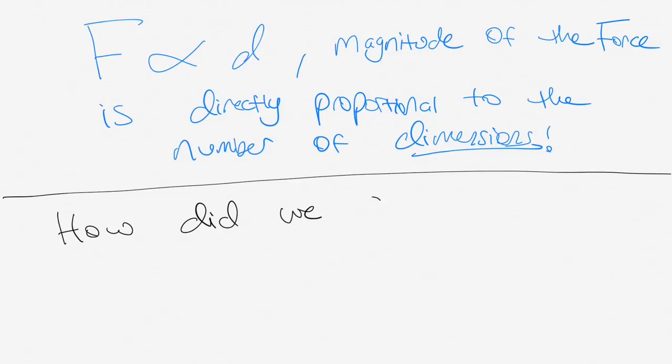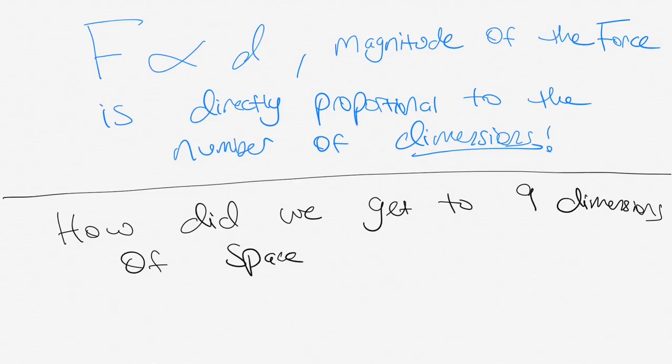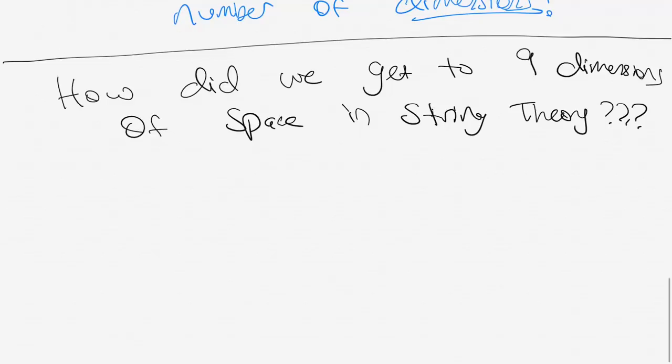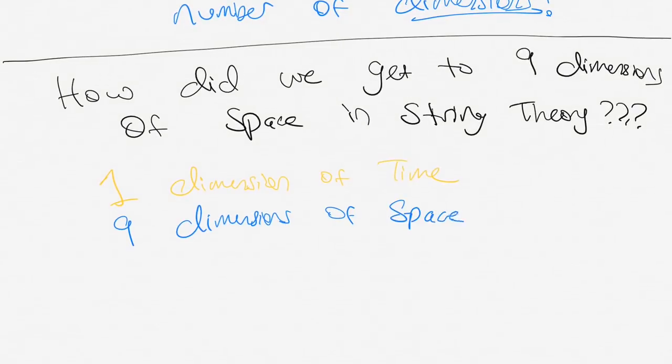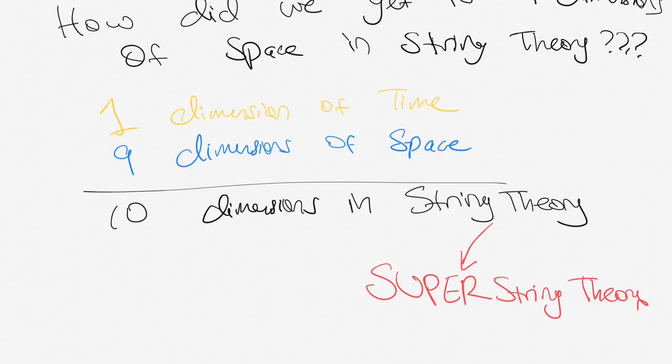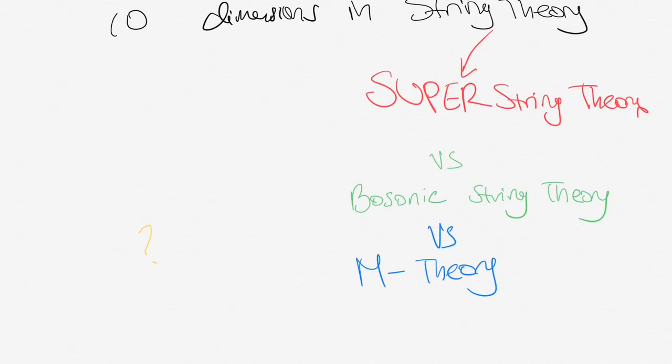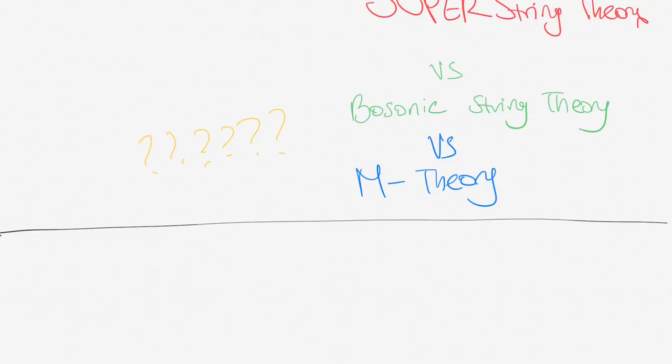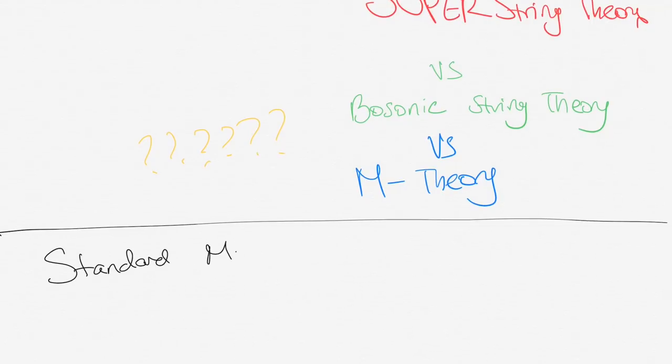How exactly did we get to the 9 dimensions of space in string theory? You have one dimension of time, you got the 9 dimensions of space. So you actually have a total of 10 dimensions that comes to superstring theory versus bosonic string theory, which is the standard string theory, and then versus M theory. There's quite a lot when it comes to multiple dimensions existing in space. Now we got to look at something known as the standard model of quantum physics.